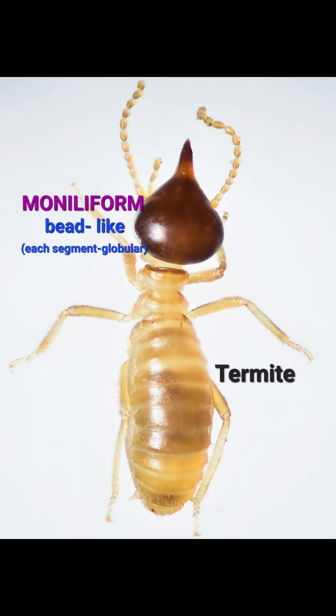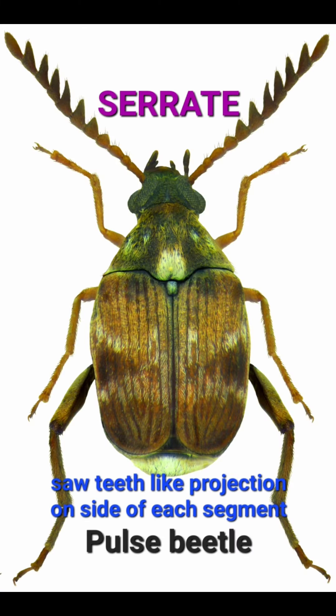Third is moniliform type antenna. It is seen in termite, in which all segments are globular in shape forming a bead-like appearance, and it forms a prominent constriction between the joints.